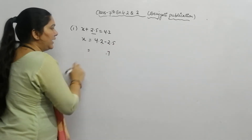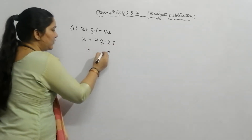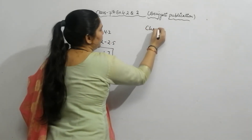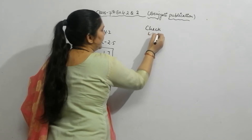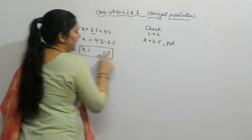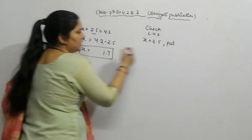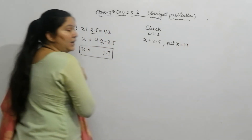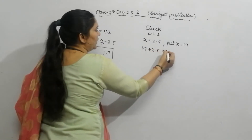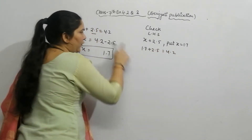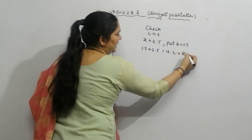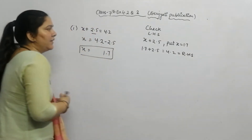4.2 minus 2.5: 12 minus 5 is 7, and 3 minus 2 gives 1. So x is equal to 1.7. Now check the result — take the left-hand side: x plus 2.5. Put x equal to 1.7, so 1.7 plus 2.5 equals 4.2, which is equal to the right-hand side. Left equals right, so our answer is correct.